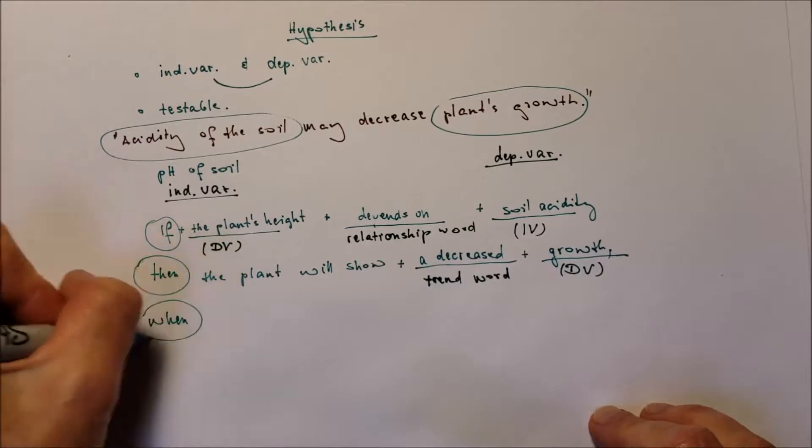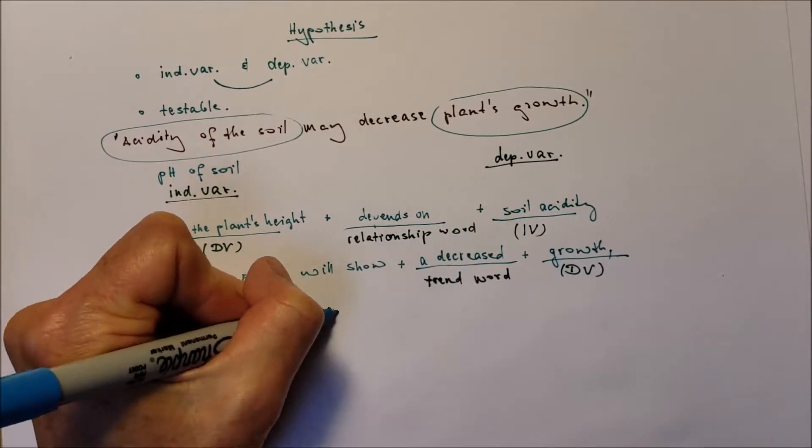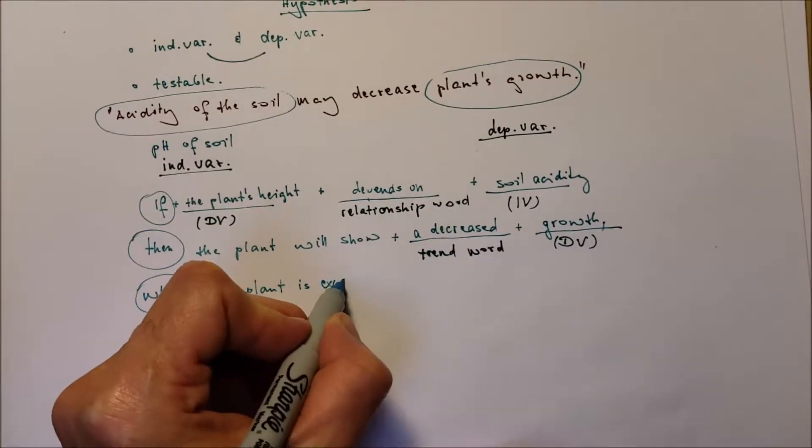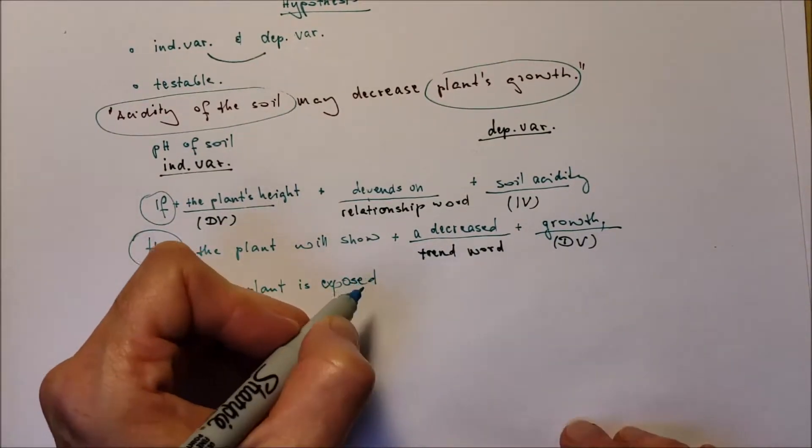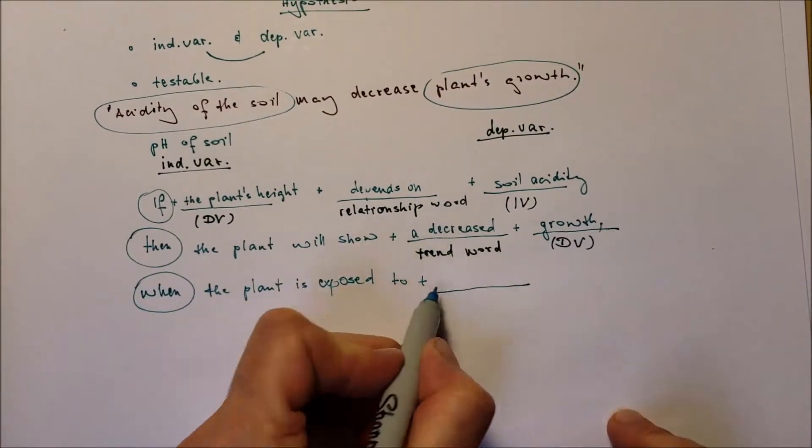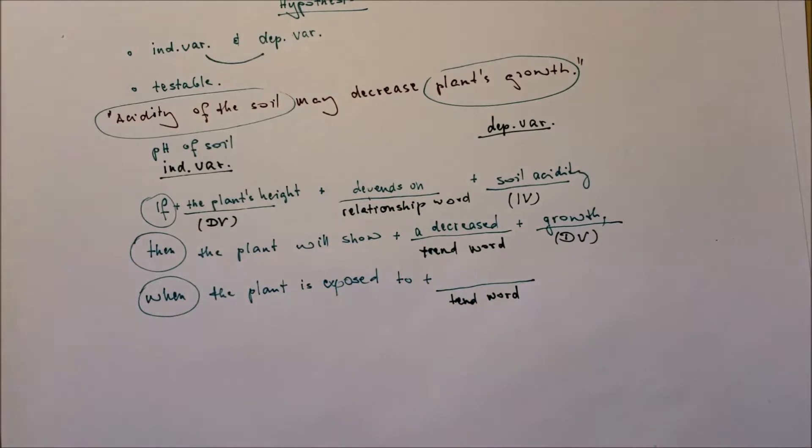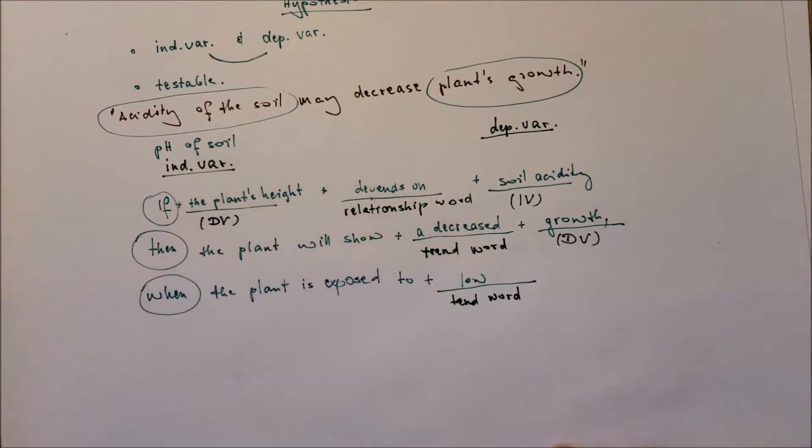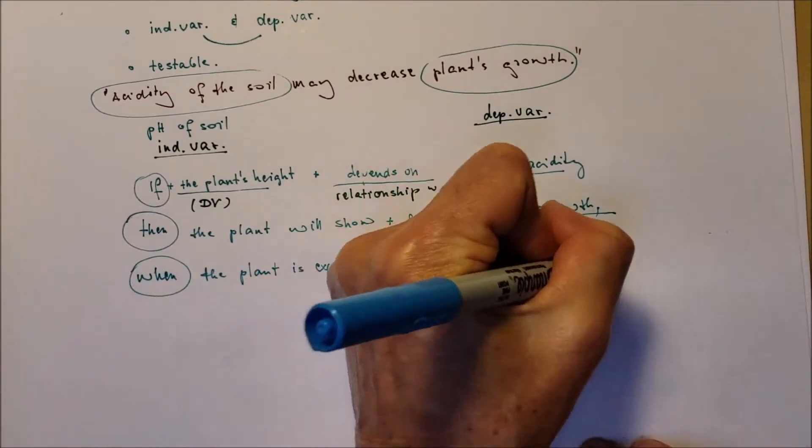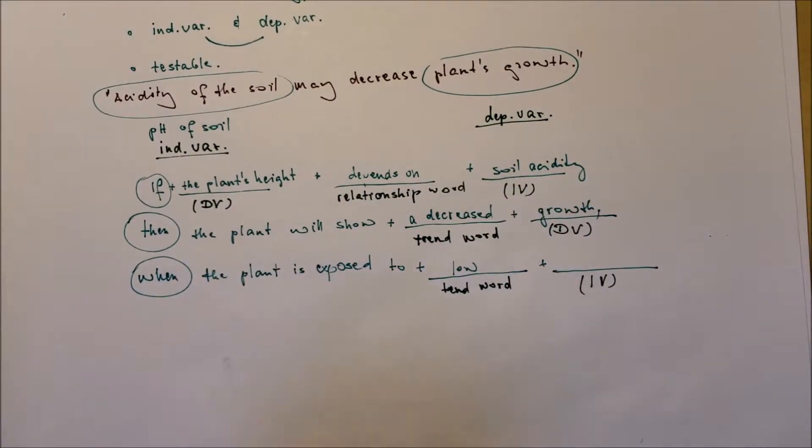When, and again, the object, the plant is exposed to, we add again a trend word. Trend word, checking the trend, what will happen - increases, decreases, higher, lower, high, low, more, less. So we will say is exposed to low and independent variable, pH value of the soil.